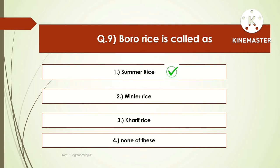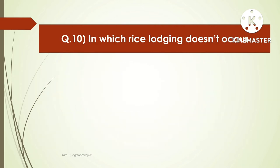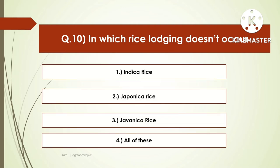All rice are cultivated in three seasons, which are known as Aus, Aman, and Boro. The next question is: in which rice variety does lodging not occur? Options are Indica rice, Japonica rice, Javanica rice, or all of these. The right answer is Japonica rice, because the Japonica rice stems are short, so lodging does not occur. Lodging means the falling down of the crop due to wind.